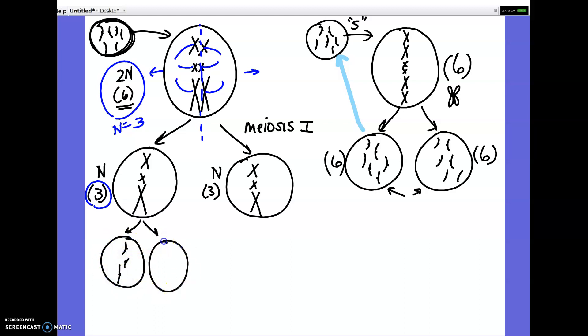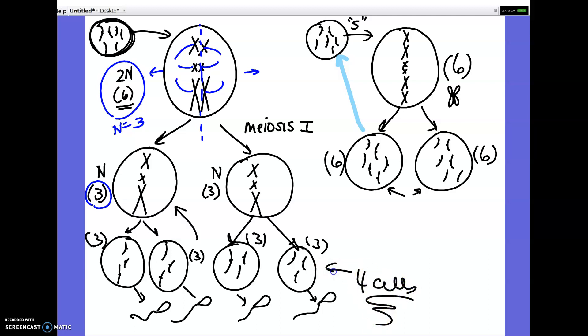So now in meiosis 2, these X's are going to split in half. So we're going to get a stick, a little stick, a long stick, a stick, a little one, and a long one. How many chromosomes are in each of these cells? Three, just like the cell that they came from. So this is not further cutting the number of chromosomes. Yes, the chromosomes break in half, but remember, each chromatid has a full set of DNA.